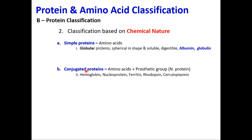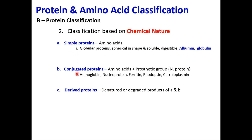Derived proteins are products obtained when simple proteins or conjugated proteins are hydrolyzed or denatured. If we partially degrade proteins in the initial stage using acids, alkalis, or enzymes, we get insoluble proteins. Further digestion yields metaproteins, and further digestion with acids or alkalis gives proteoses, peptones, and peptides, which are absorbed in the intestine.